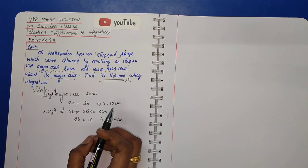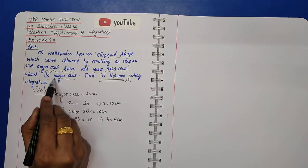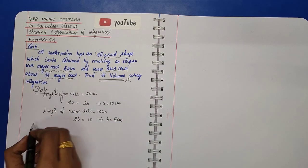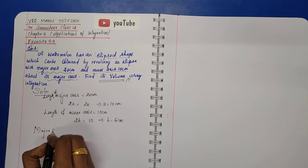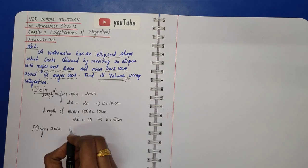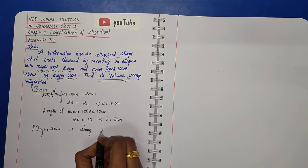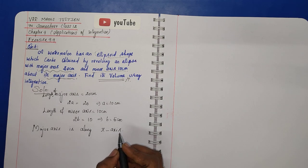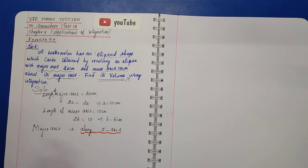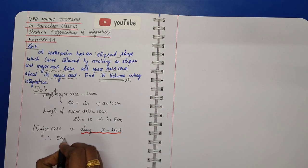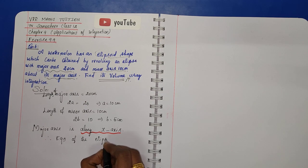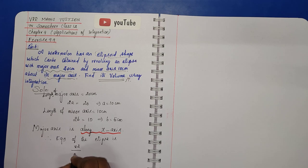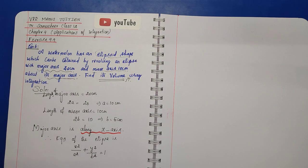The major axis is along the x-axis. We are revolving with respect to the major axis. Since the major axis is the x-axis, the equation of the ellipse is x²/a² + y²/b² = 1.